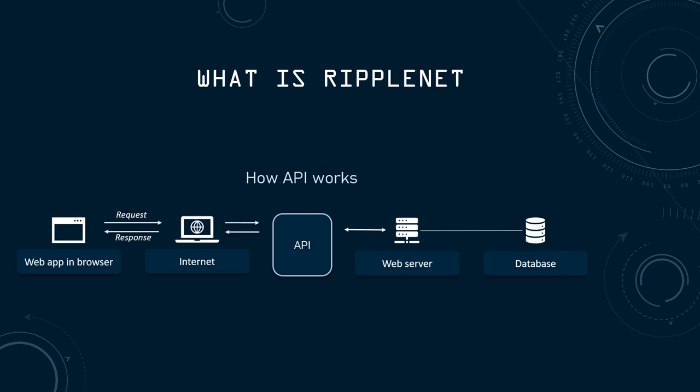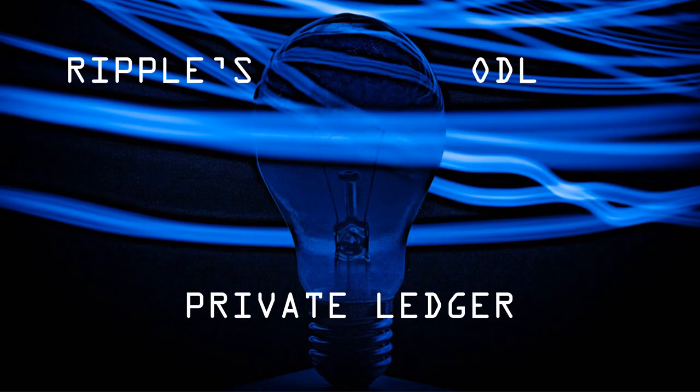What is RippleNet? RippleNet is a messaging platform that makes use of XRP via a single API — application programming interface. Just think of it as a connection between computers. This is carried out over a private ledger used in RippleNet's ODL. Why use a private ledger? So that the privacy of banks can be maintained.